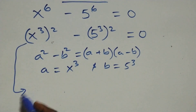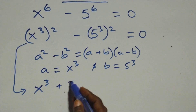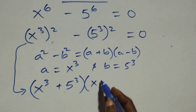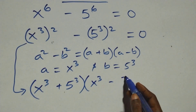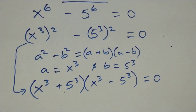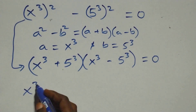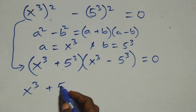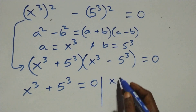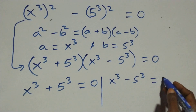We can write this as x raised to power 3 plus 5 raised to power 3, into bracket open bracket x raised to power 3 minus 5 raised to power 3, equals to 0. So we have x raised to power 3 minus 5 raised to power 3 equals to 0.